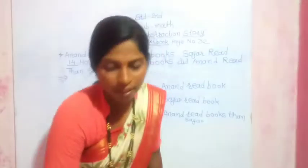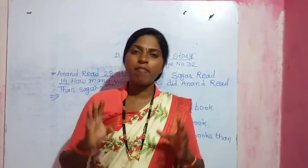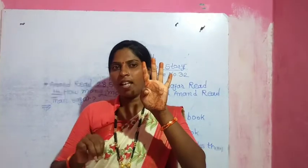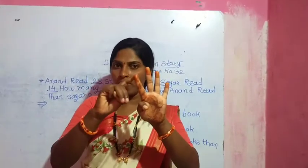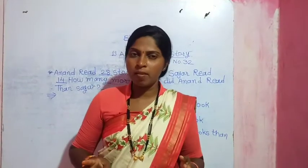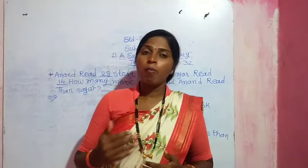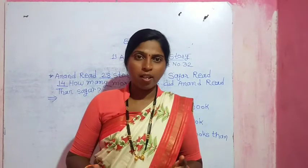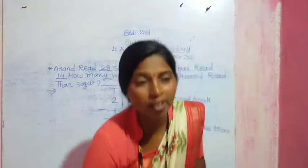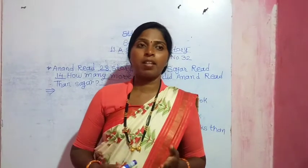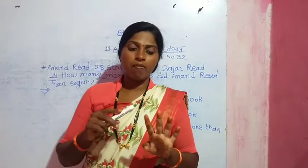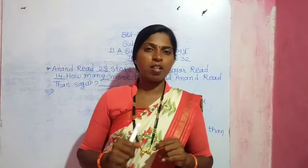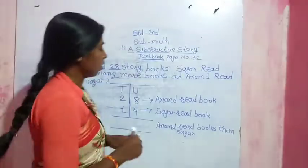Yes. So you have 8 fingers — 5 plus 3 — 8 fingers, then remove 4 fingers: 1, 2, 3, 4. This method is solved. The answer is 4. If you are counting: 5, 6, 7, 8 — that is 4 numbers. You can solve it this method. The answer is 4.